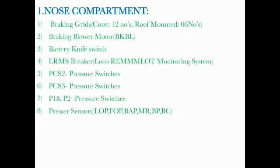Nose Compartment. Item 1: Braking Grids. Total number of Braking Grids in a conventional loco is 12, roof mounted 6. Item 2: Braking Blower Motor. Item 3: Battery Knife Switch. Item 4: LRMS Breaker.